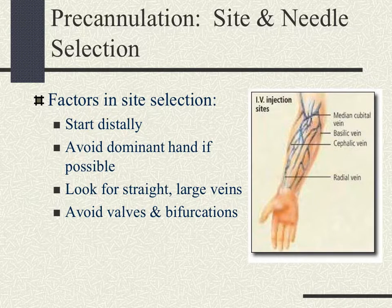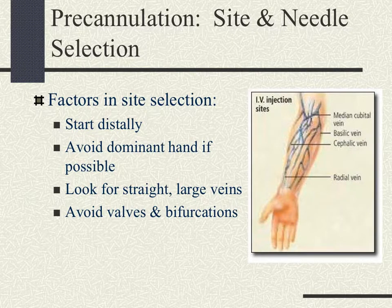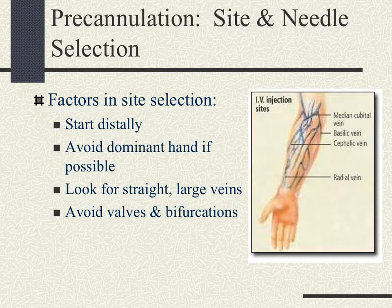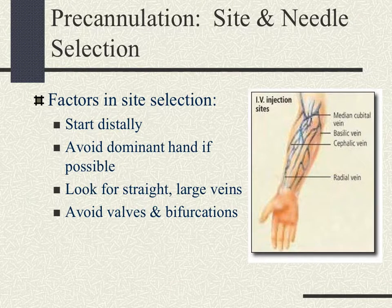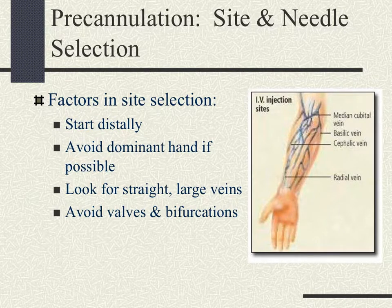Tie the tourniquet tight, but don't forget to take it off — emphasize that two-minute rule. It's about occluding the vein, not the artery, so you should still be able to feel a pulse. Going back to the bifurcation, those are recognized by an inverted V shape. These veins are less likely to roll; however, you have little chance of a successful IV using those bifurcations. Access below the bifurcation for the highest chance of success.